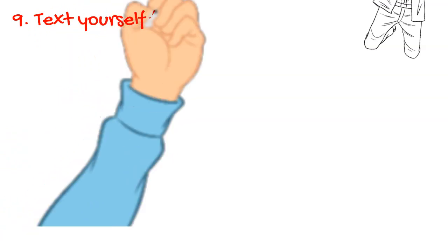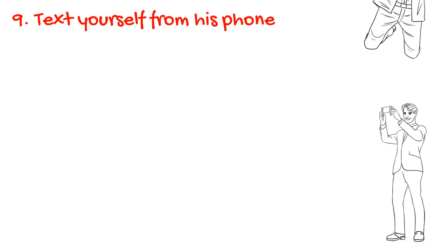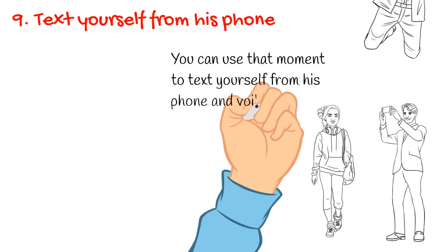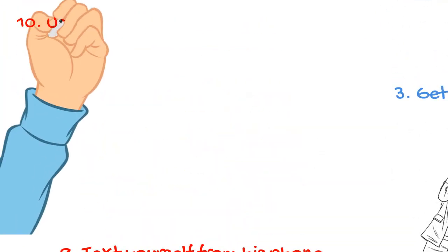Nine: text yourself from his phone. This one's a little bit tricky because it demands you to wait for the perfect moment when he turns his back and leaves his phone out of his sight. You can use that moment to text yourself from his phone, and voila, you have his number. I don't think I even have to tell you how much he will be amazed by your confidence, wits, and skills.